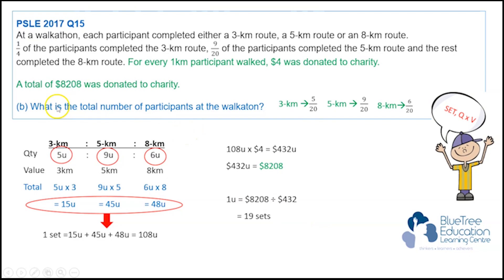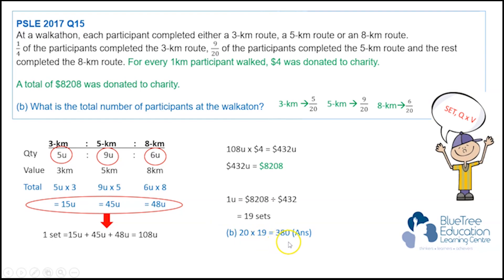The question asks for the total number of participants at the Walkathon. So we add up the 5 units, 9 units, and 6 units, which gives us 20 units. So 20 times 19 equals 380, which is the total number of participants at the Walkathon.